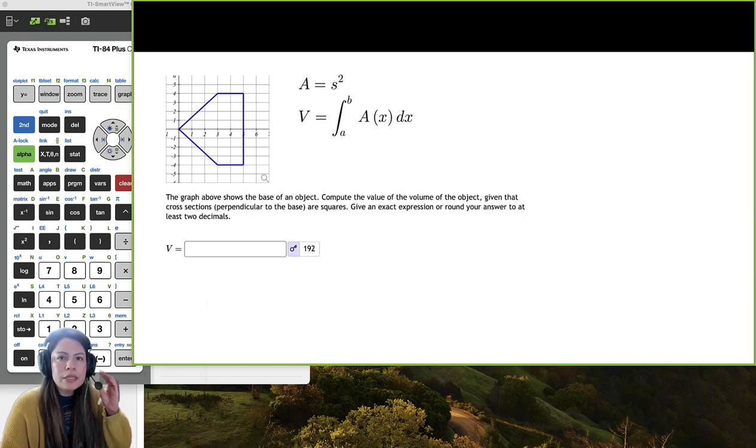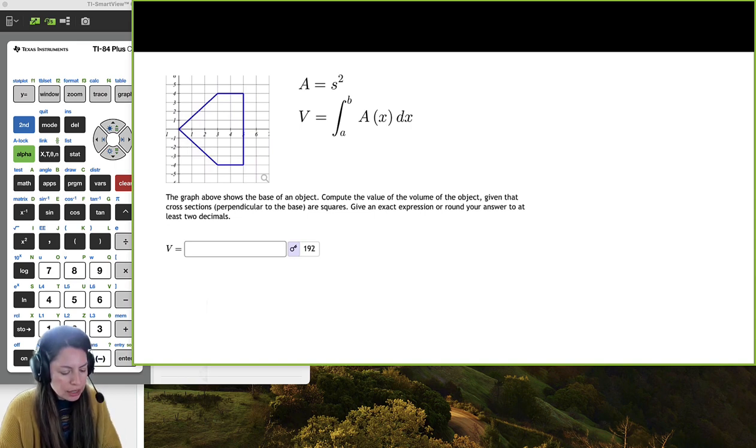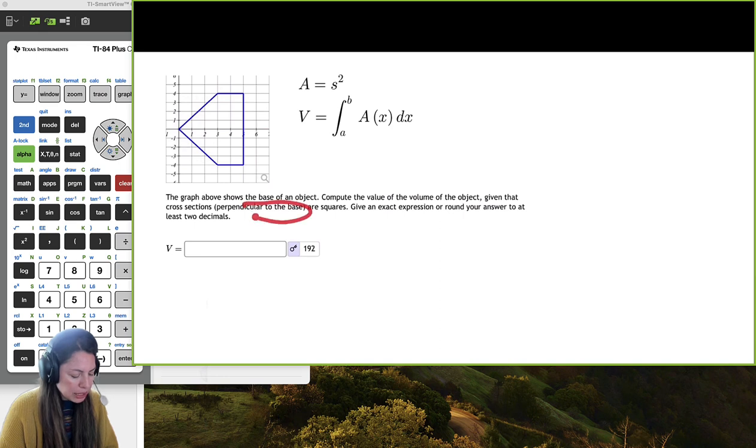Hi! So in this problem we're going to find the volume of the object of the base that's given in the graph. Given that the cross-sections perpendicular to the base are squares, give an exact expression or round your answer to at least two decimal places.